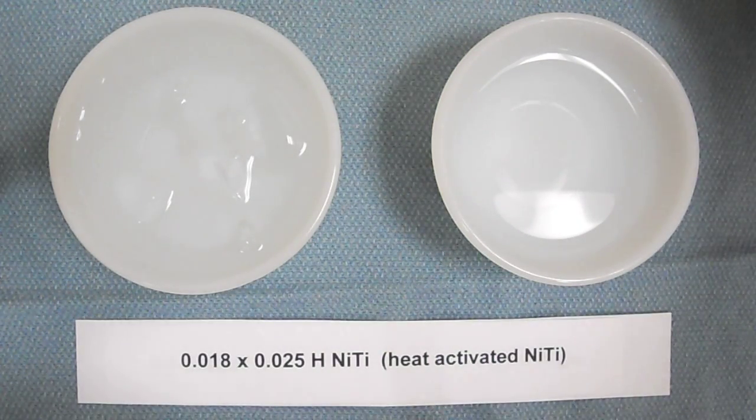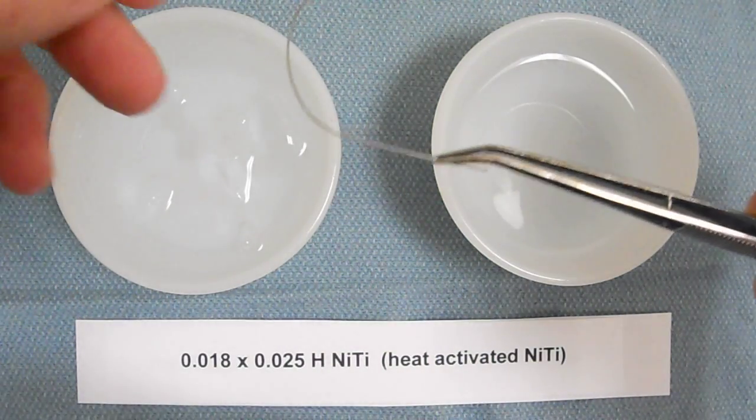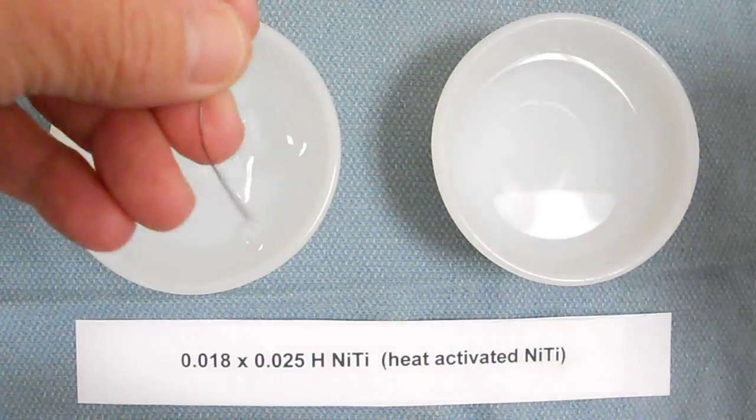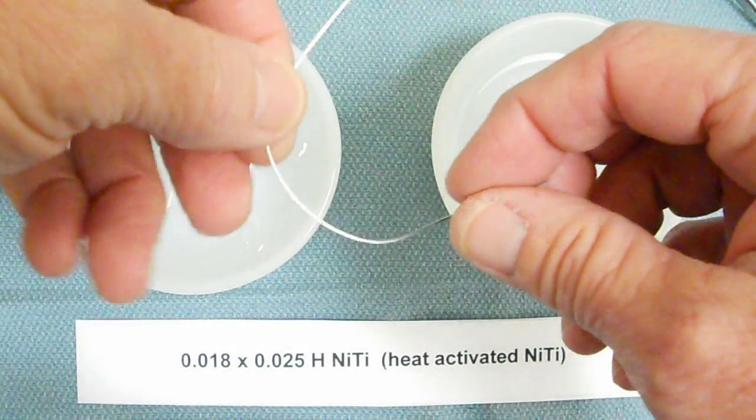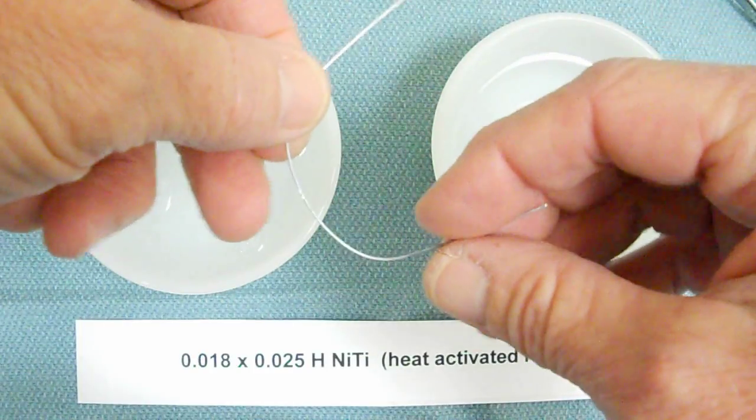Now we're going to look at something called 0.018 x 0.025 heat activated NiTi. The 0.018 and 0.025 are two dimensions to define a rectangular arch wire, and the heat activated property comes from being alloyed with copper.